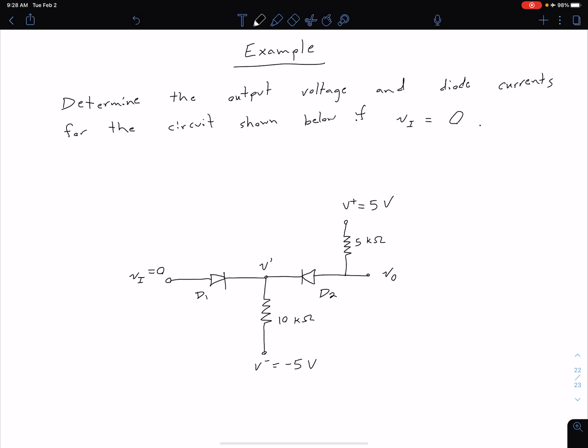So we're told this input voltage over here on the left is equal to zero. We can see we have two diodes, D1 and D2, positive and negative supplies, and a couple resistors.